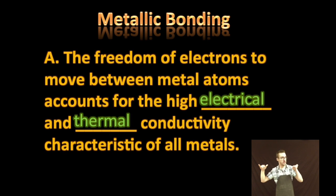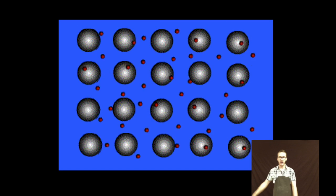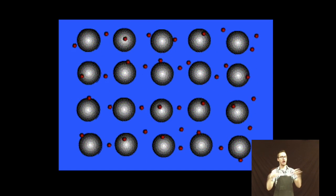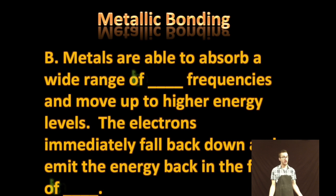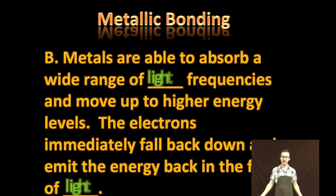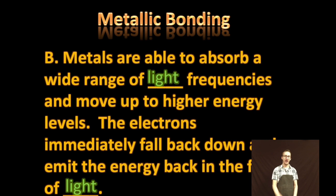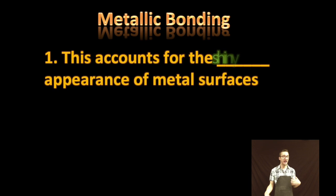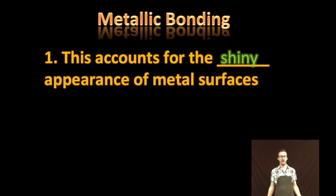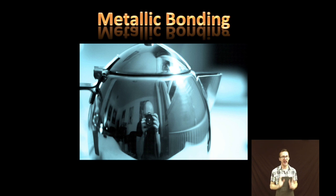Electrons can just flow right on through the sample — that's the electron sea model carrying the current. Metals are also able to absorb a wide range of light frequencies and move electrons up to higher energy levels. Those electrons immediately fall back down and emit the energy back in the form of light, which gives us the very shiny or lustrous appearance that we see with most metal surfaces.